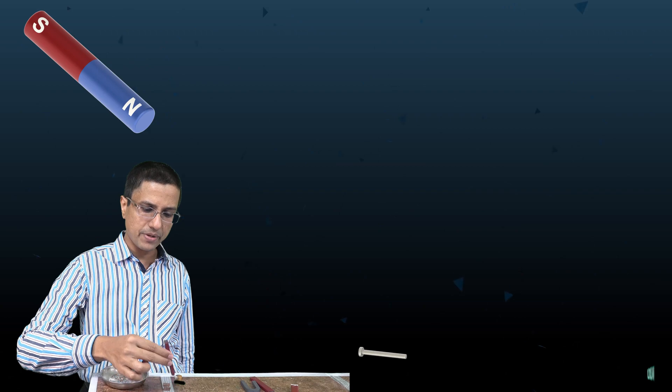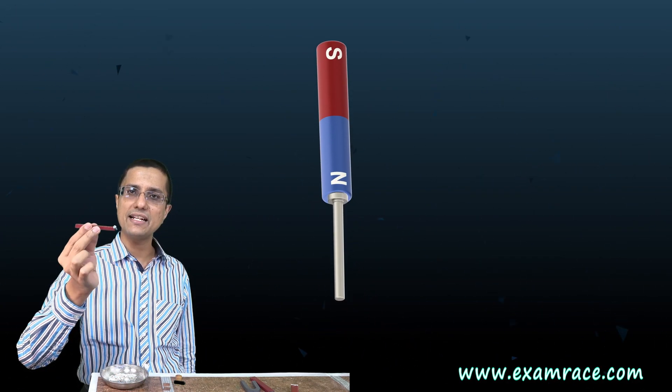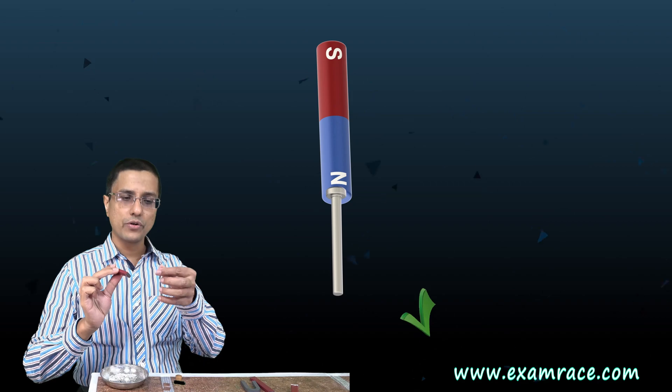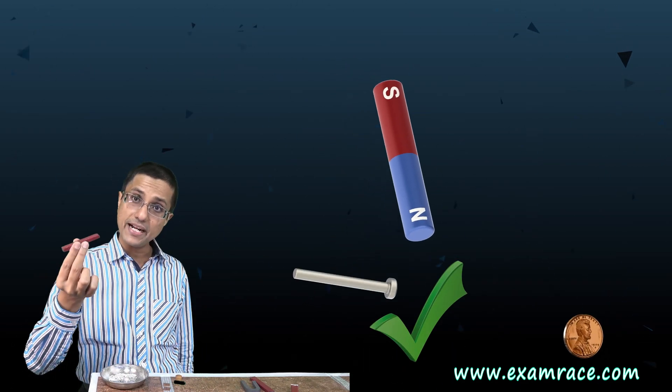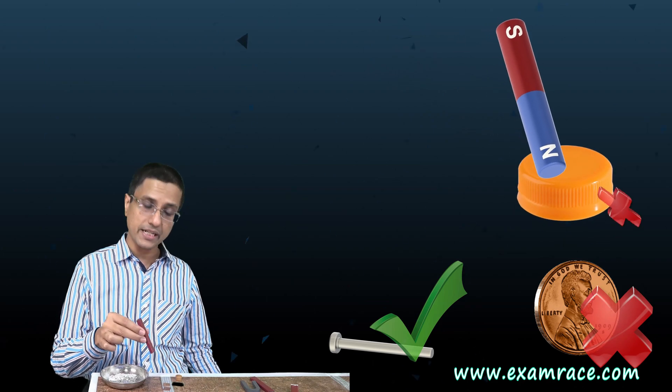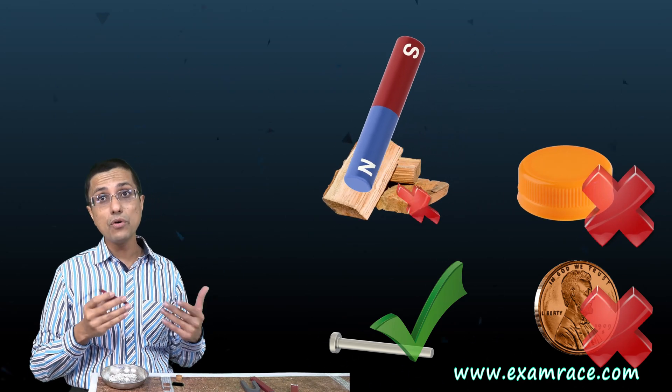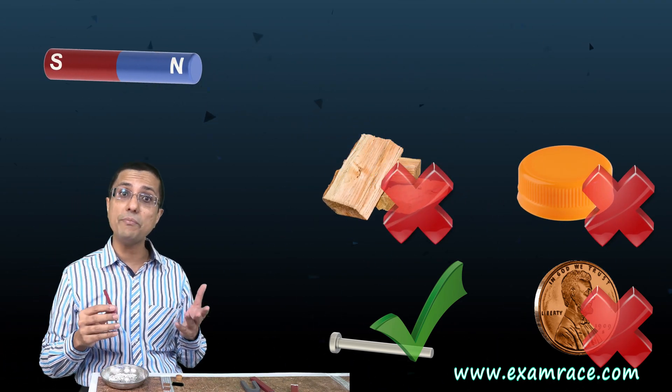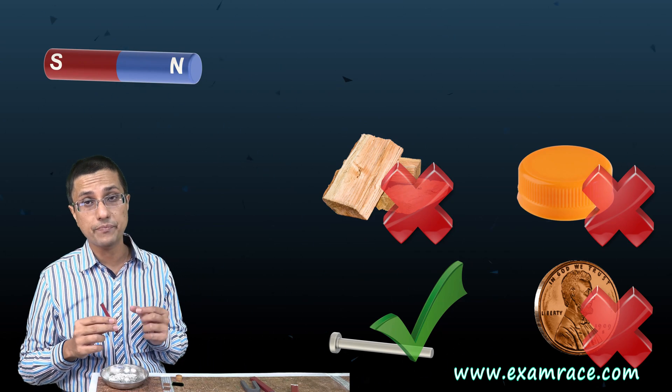For example, if I bring it close to an iron nail or iron screw, then it would get attracted towards the magnet. This magnet has no effect on copper. It has no effect on plastic or on wood either. So most of the materials are actually non-magnetic. They do not respond to magnetism.